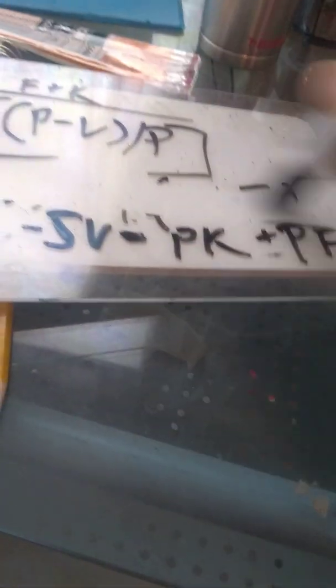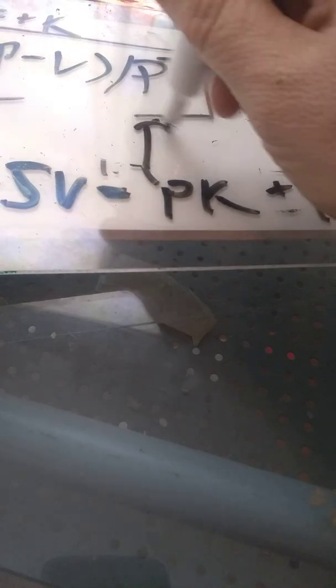So really what we have is p times k plus f minus s. Minus sales: capital, fixed cost, sales.